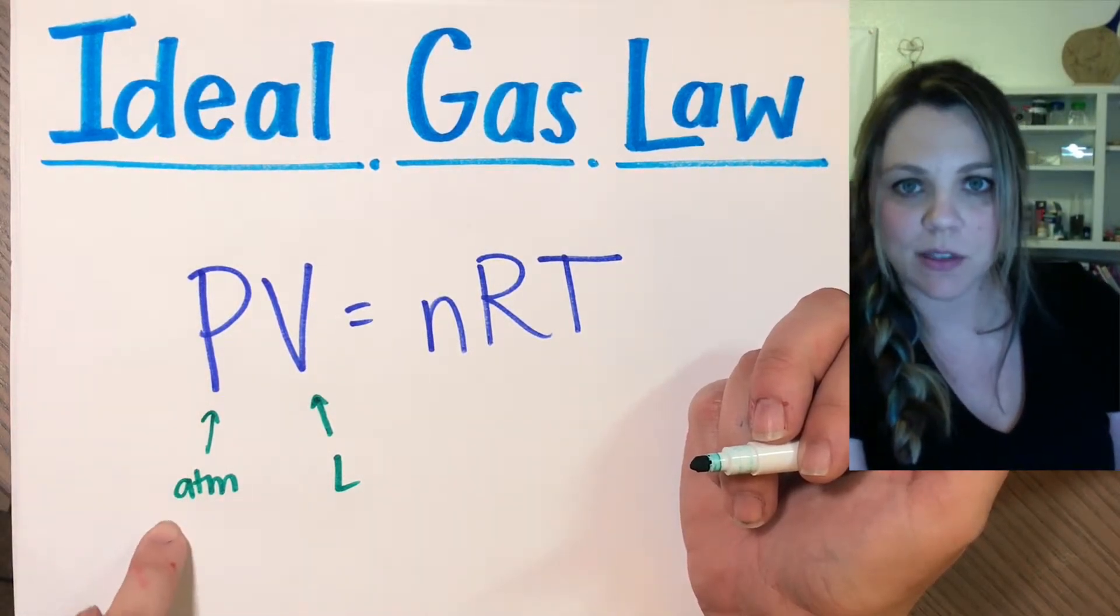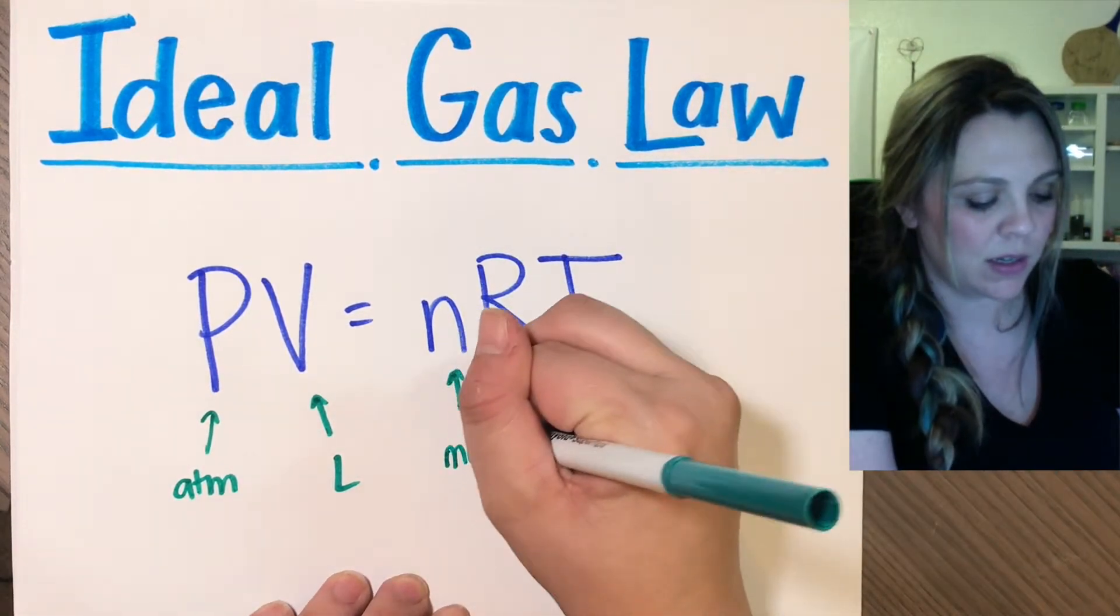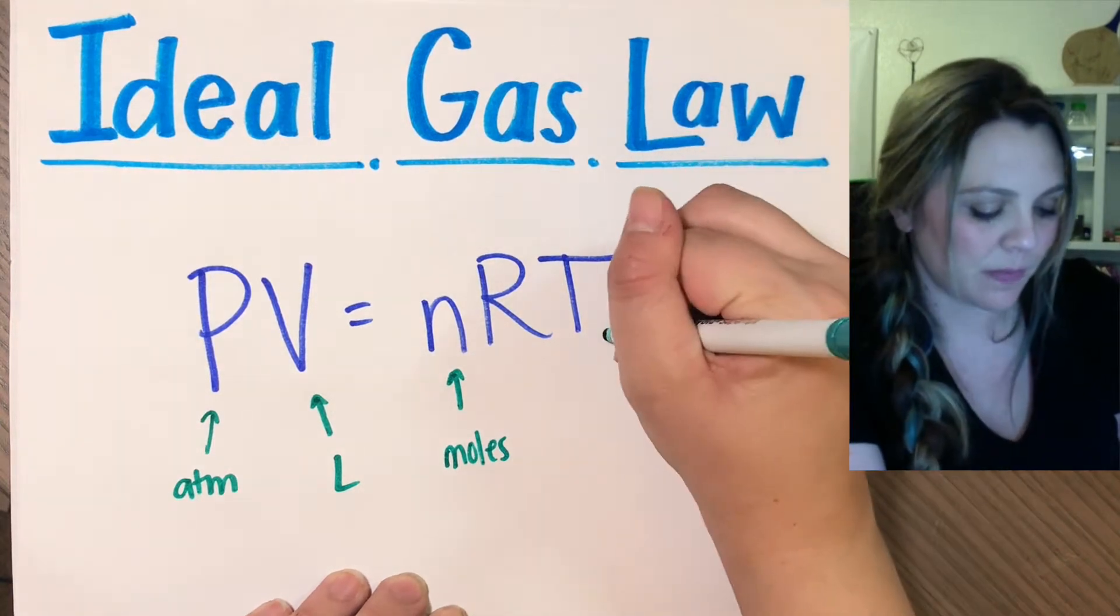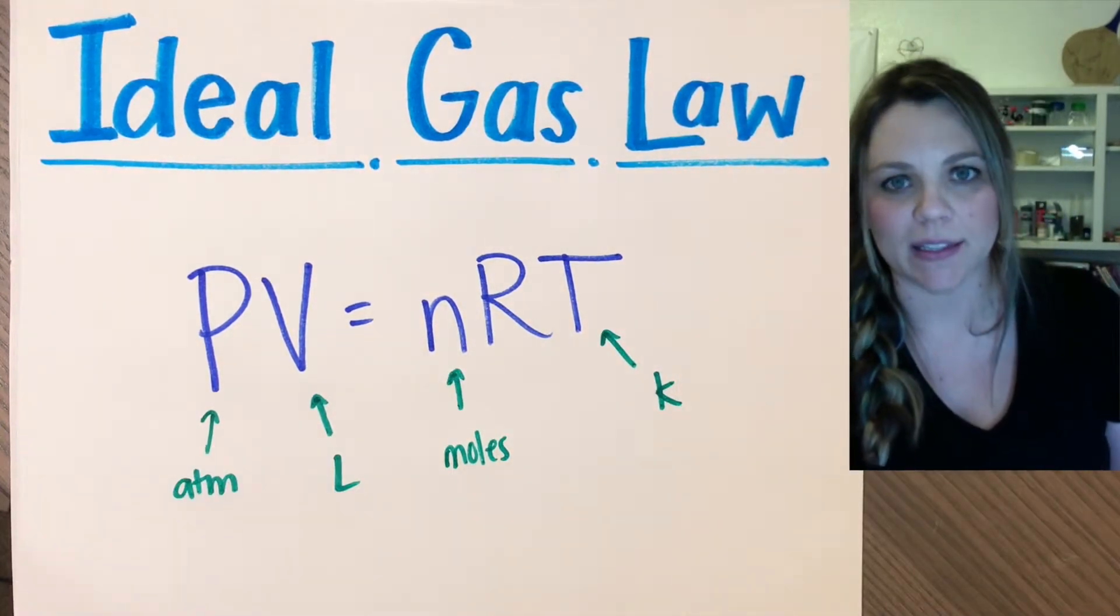So pressure is in atmosphere, volume is in liter, number of moles is in moles, temperature is in Kelvin, and we're left with what the heck is this R.